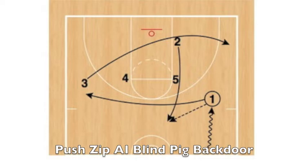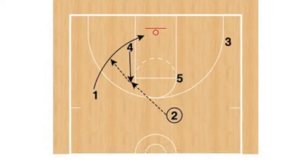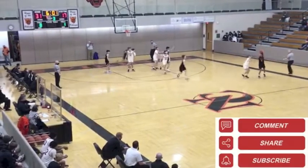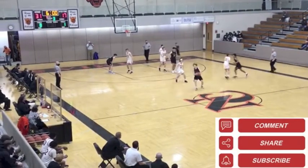The first action out of this movement pattern is a side ball screen with a stagger on the weak side to keep the defense busy. The second action is a pretty beautiful action to watch play out — a blind pig back door.